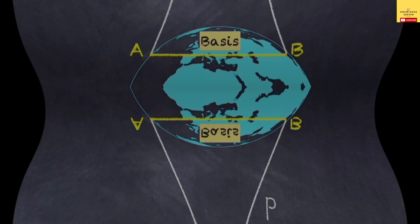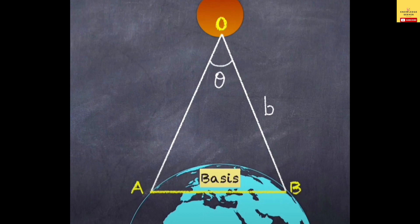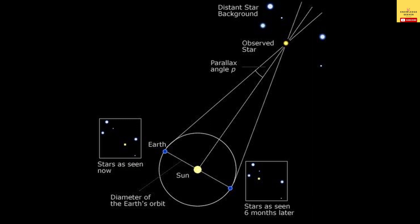We can use this change in apparent position to calculate the distance of the thumb from the body, and this exact same method is used to measure distances of stars which are close to us. The problem is that even if we put two telescopes on opposite ends of the Earth, the distances in space are so big that we don't get enough angular resolution. To overcome this, we use the revolution of Earth around the Sun — taking two observations of the same celestial object six months apart, for example one in January and the next in July.